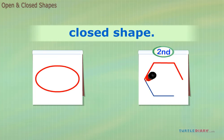The second shape, however, is open because there is a break in the line. The shape is not completely closed in.